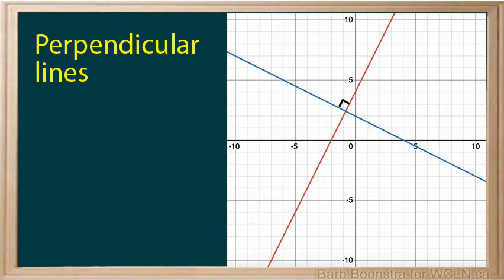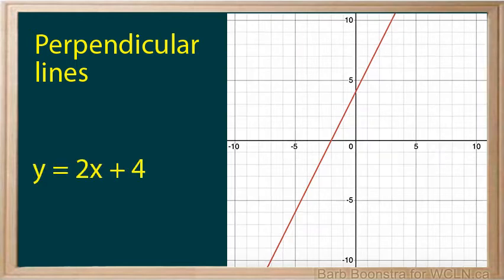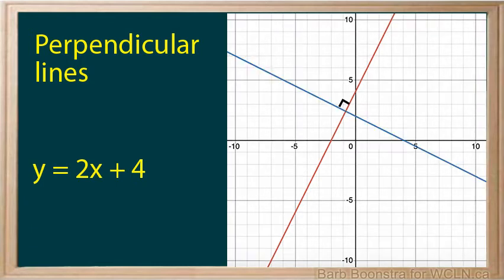Lines are perpendicular if they intersect at right angles — that is, 90 degrees. The equation of this line is y equals 2x plus 4. Here is a line perpendicular to it. Its equation is y equals negative half x plus 2.